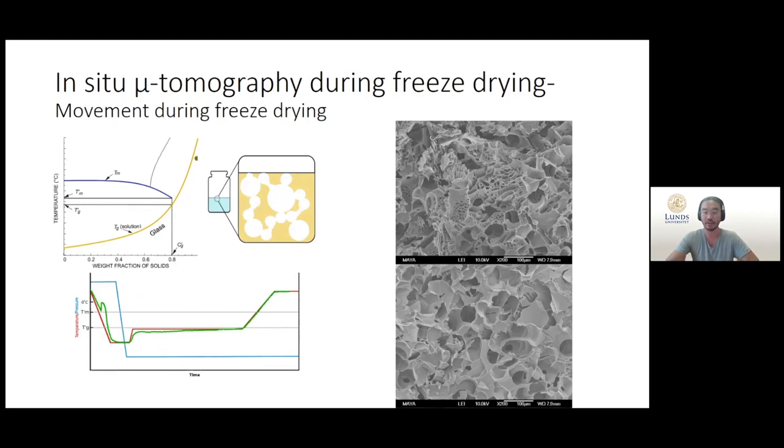So this movement creates another structure called the secondary structure that consists of pores that is connected to each other and out to the vacuum. So if we can investigate the movement of ice crystals and the material we can confirm or invalidate this theory. But this is a challenging task and we have few hurdles to overcome.